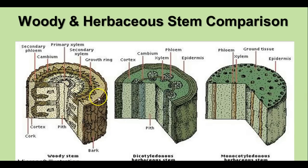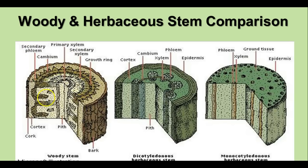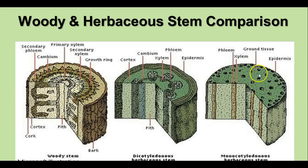Comparing woody and herbaceous stems, they all have a cambium layer that allows for lateral growth. In the woody stem, there is primary xylem and secondary xylem, and that's what forms the tree rings — the growth rings of the plant — with a new layer produced each year. In the herbaceous dicot stem, the vascular bundle surrounds that cambium layer. In the monocot stem, you just see vascular bundles scattered throughout the ground tissue without that organization.